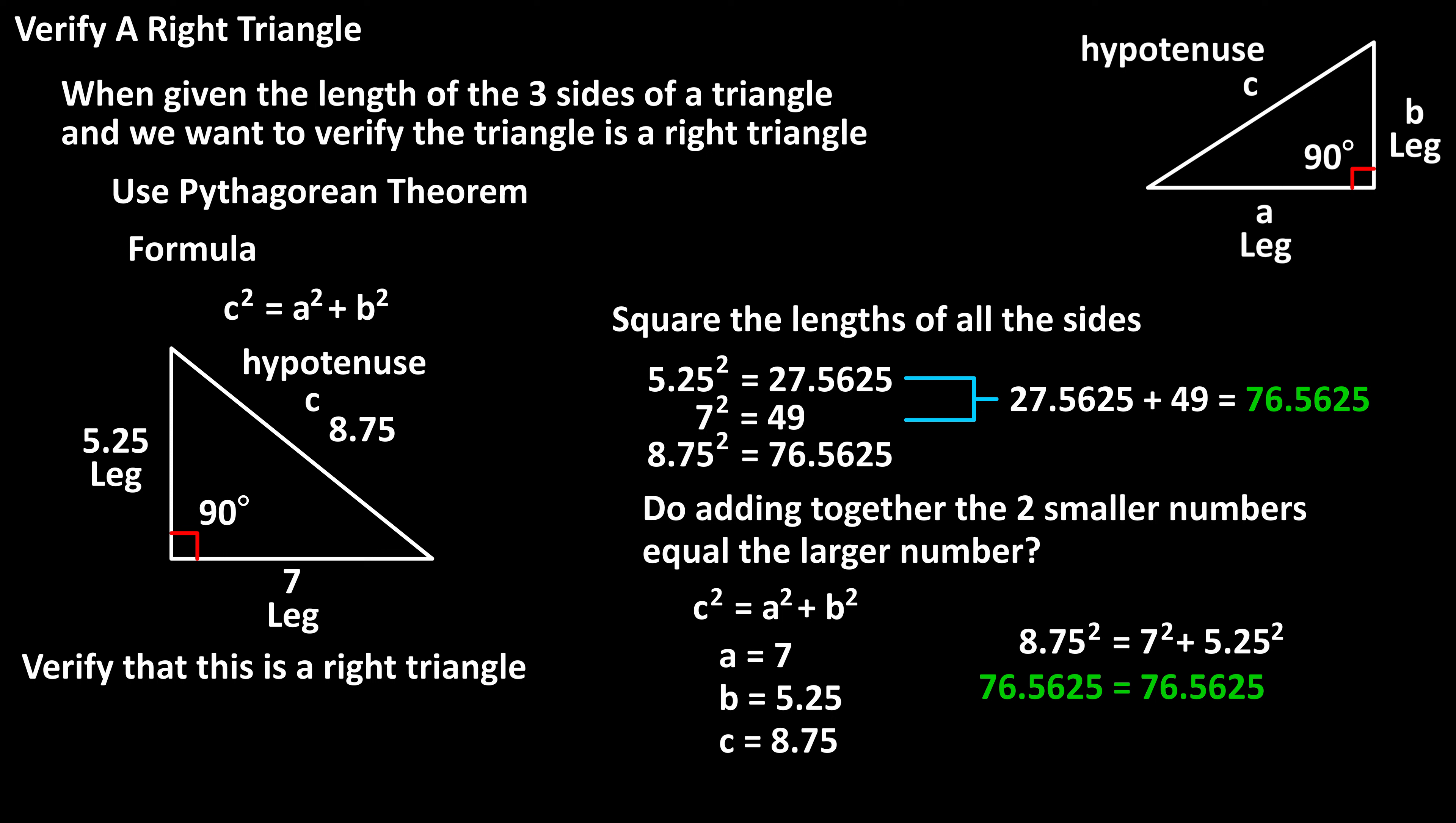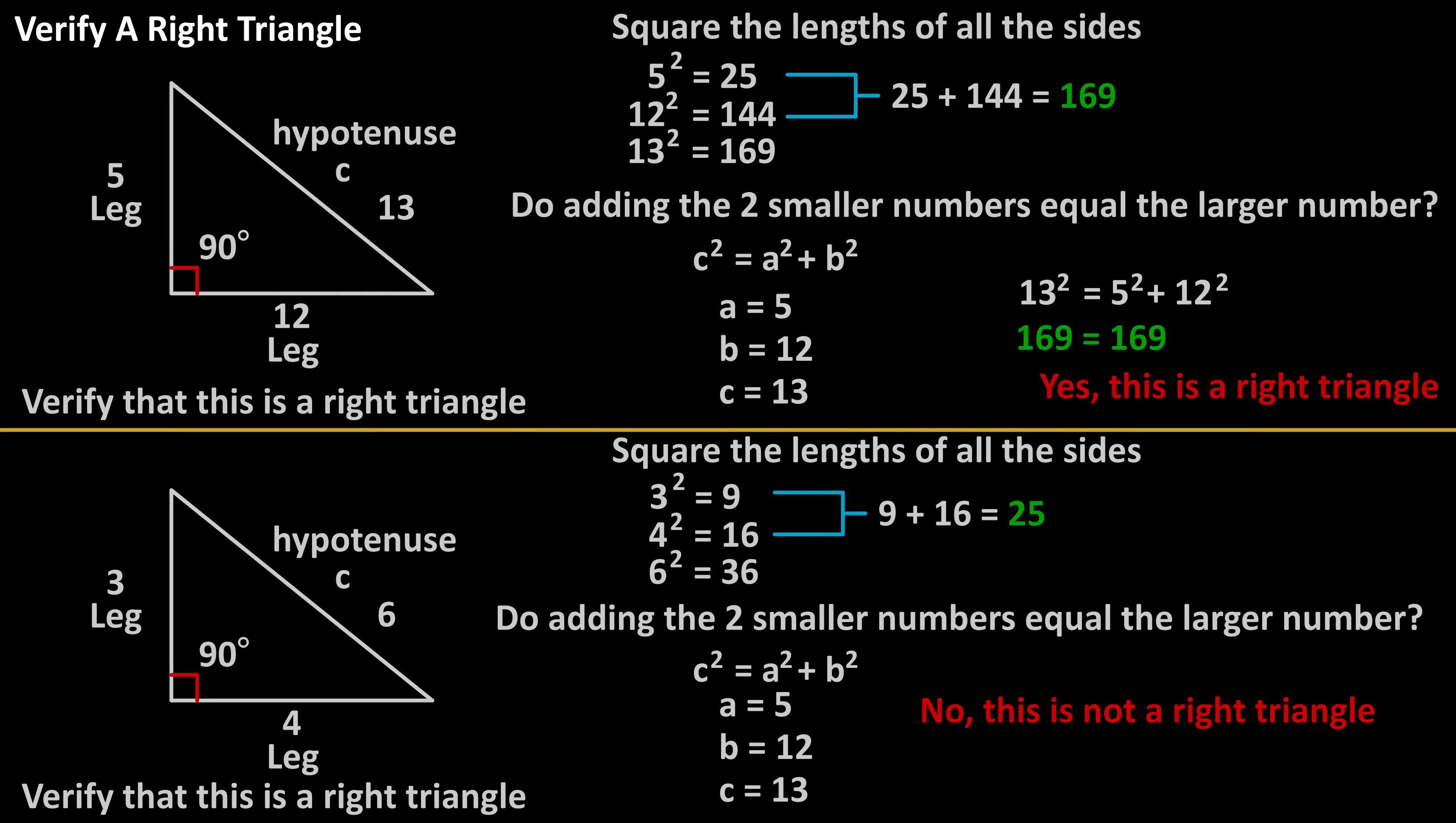The key to verifying a right triangle is to square all of the lengths of the sides and check if adding the two smaller numbers together equals the larger number. Here are a couple more examples of verifying a right triangle.